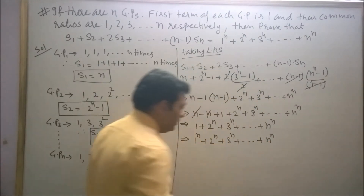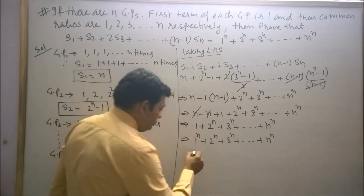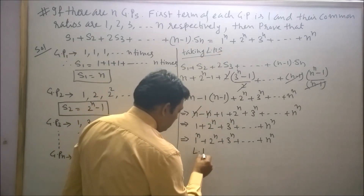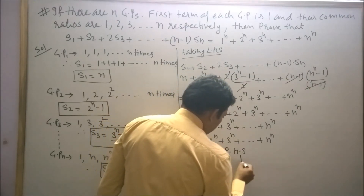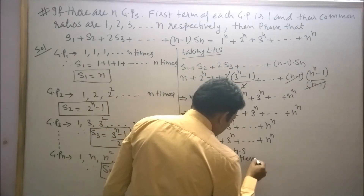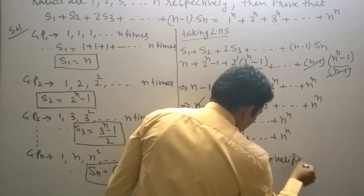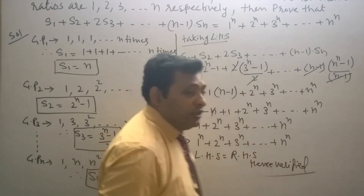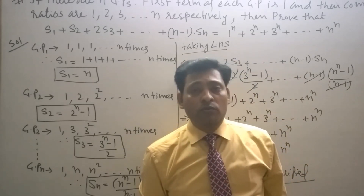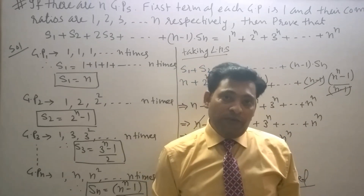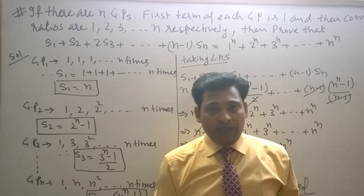This is nothing else but our right-hand side. So LHS is equal to RHS. Hence proved. In today's lecture I have solved a good question related to geometric progression. Keep watching my videos and keep practicing. Thank you. Take care.